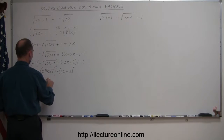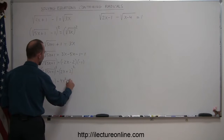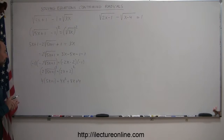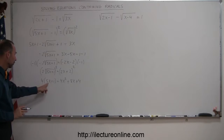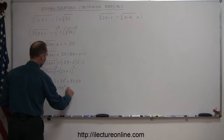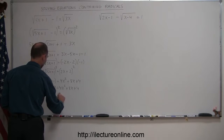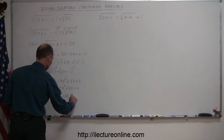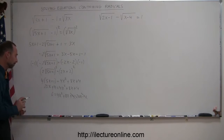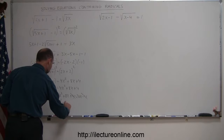When I square both sides, I get 4 times 5x plus 1 equals 4x squared, plus twice the product of the two terms which is 8x, plus the last term squared which is plus 4. Getting rid of the parentheses gives 20x plus 4 equals 4x squared plus 8x plus 4. Moving everything to one side: 0 equals 4x squared plus 8x plus 4 minus 20x minus 4. The plus 4 and minus 4 cancel, leaving 0 equals 4x squared minus 12x.